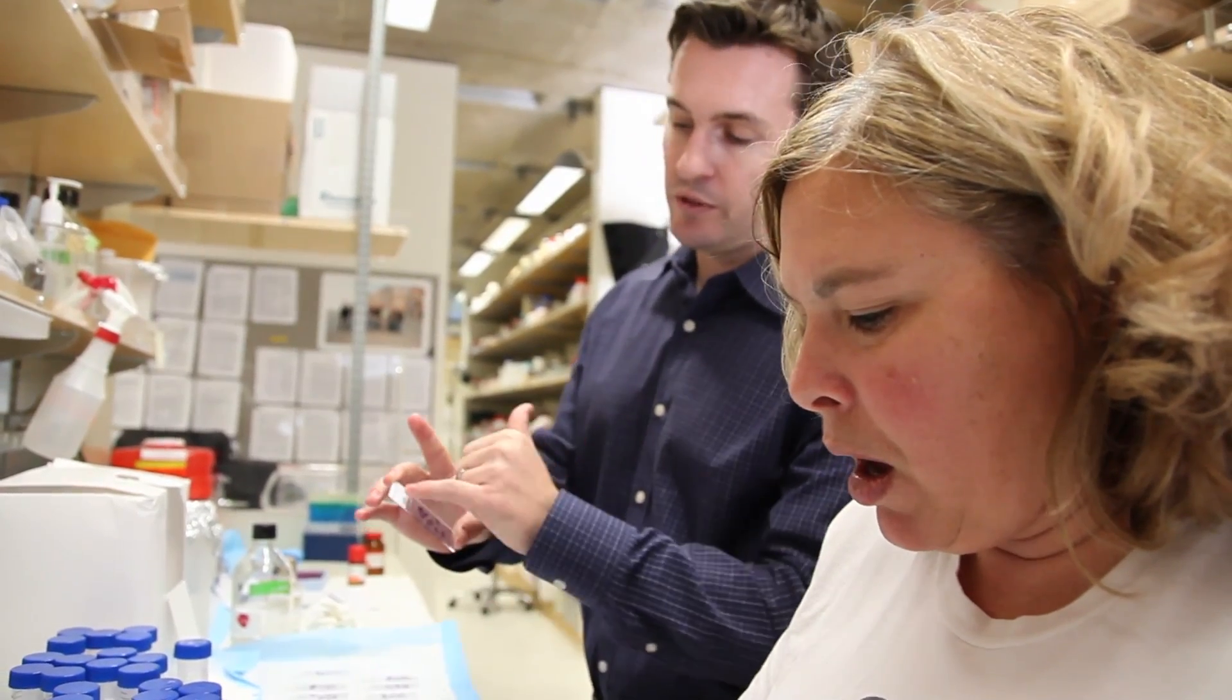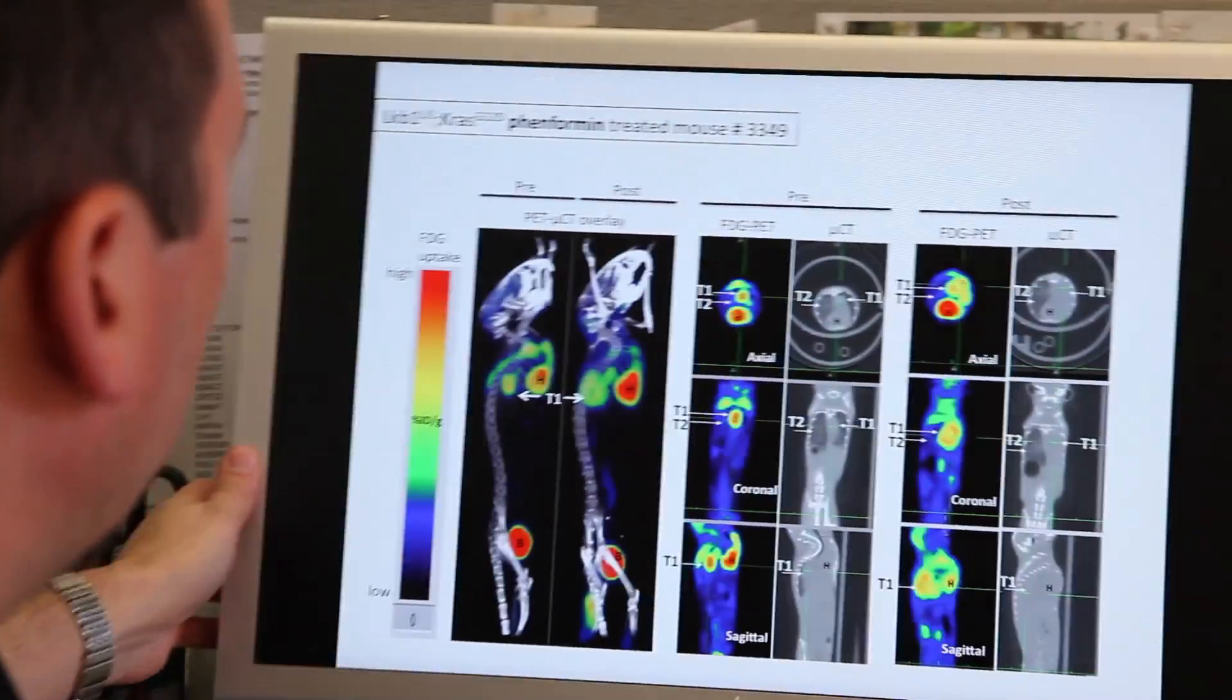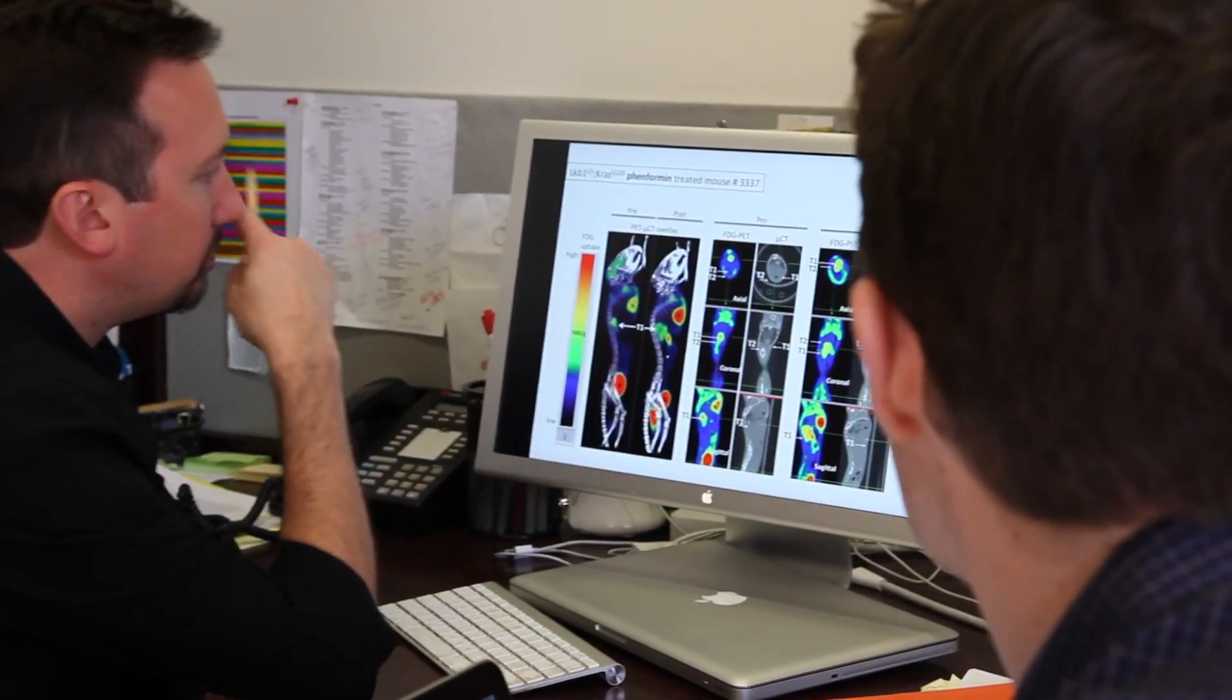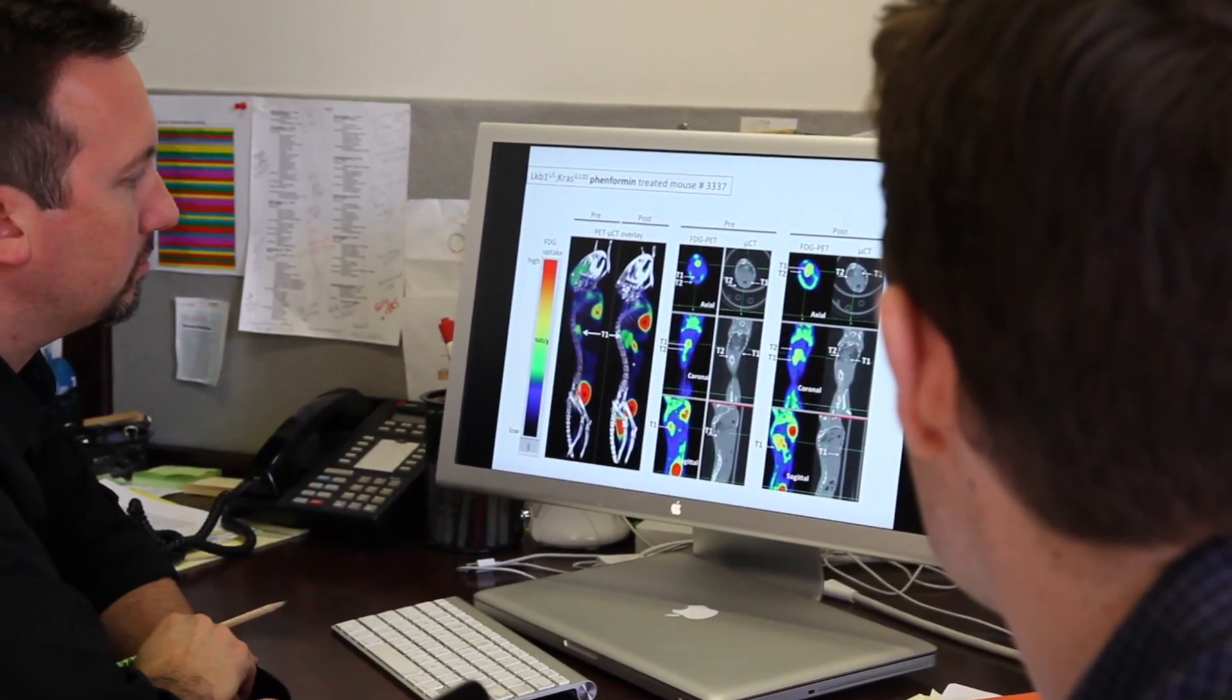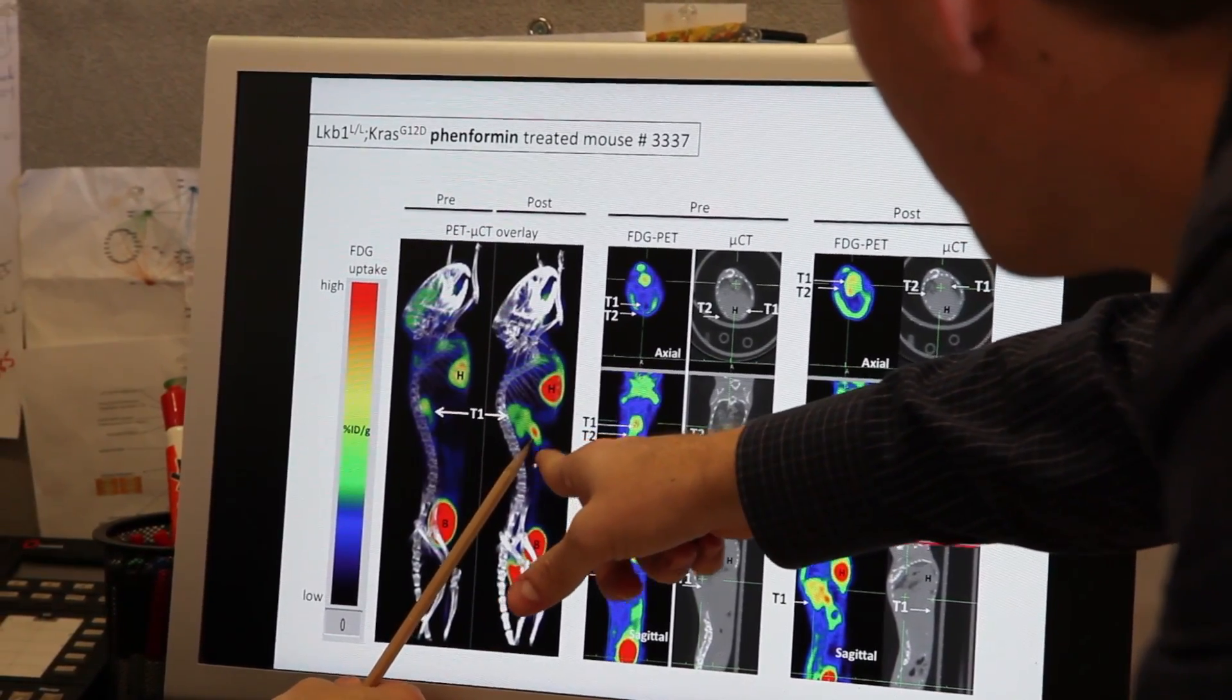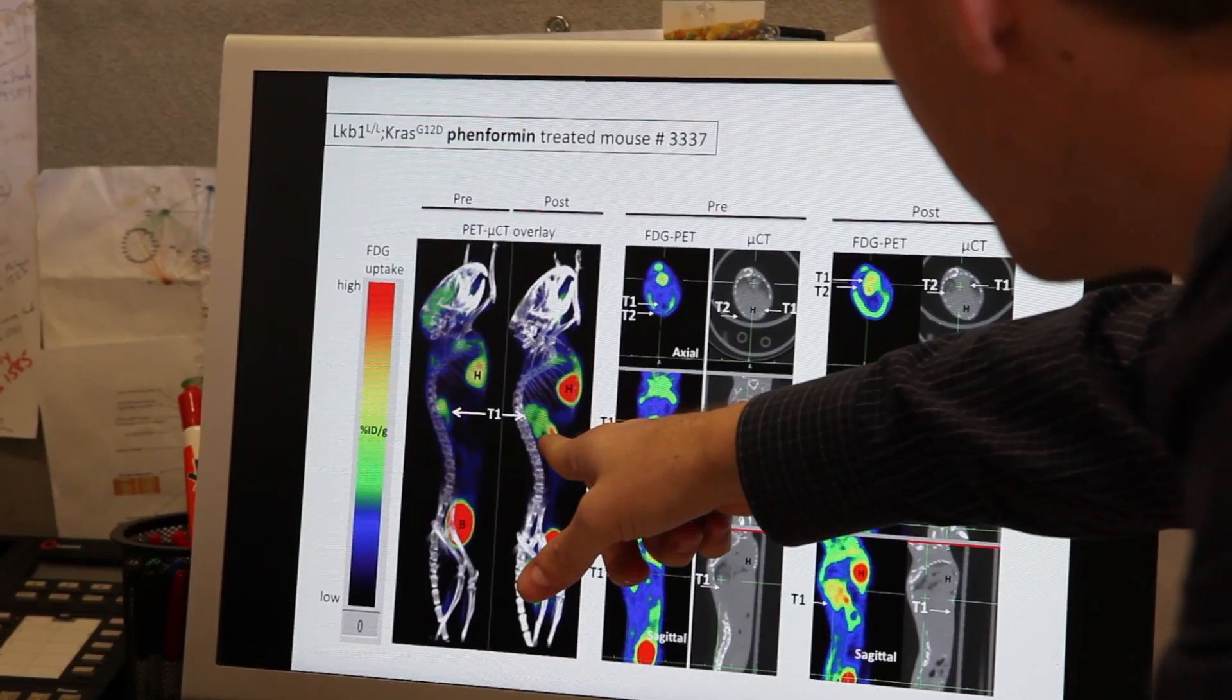When we first got the results back, particularly with the FDG-PET and the micro-CT images that human patients use and looking at the mice and seeing those, we saw evidence that the tumor cells were actually dying in situ, in their spot, in response to the drug.